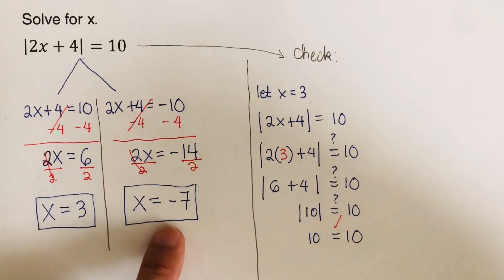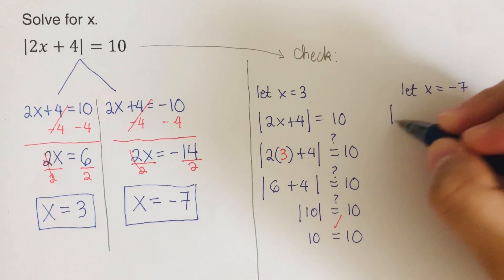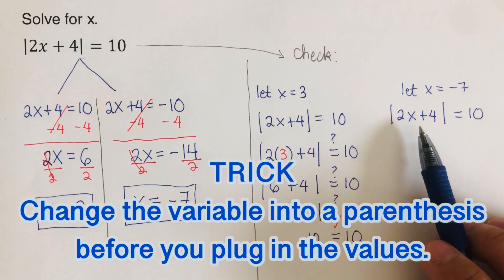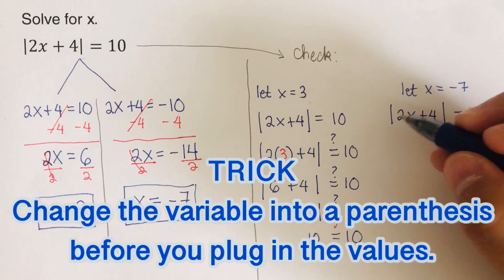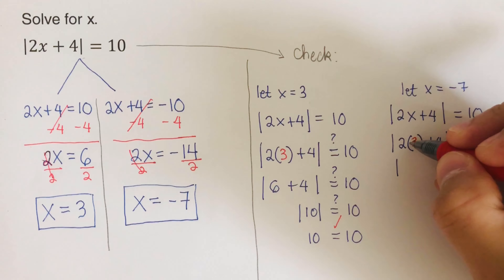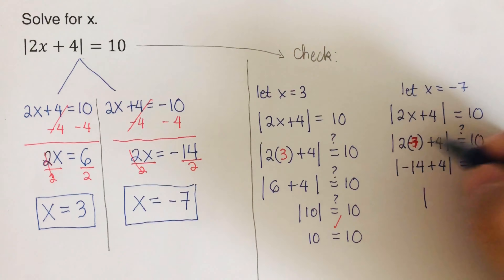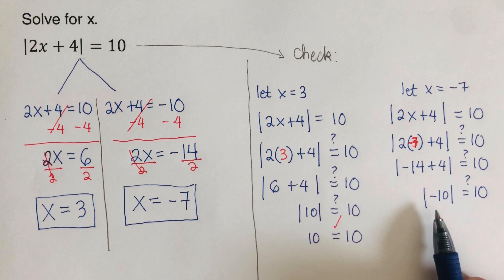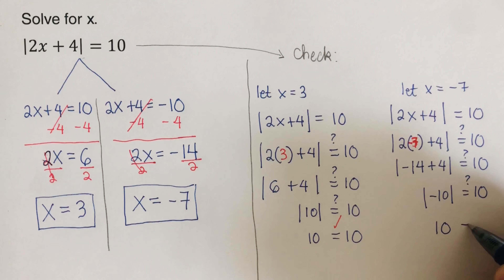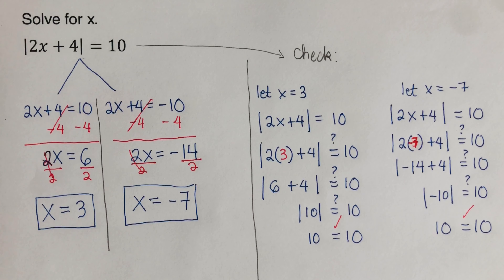Now let's check x = -7. We rewrite the original equation |2x + 4| = 10, change the variable to parentheses, and plug in -7. We get |2(-7) + 4| = |-14 + 4| = |-10| = 10. Absolute value always gives the positive value, so 10 = 10. x = -7 is confirmed as a solution.